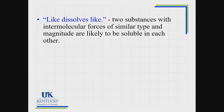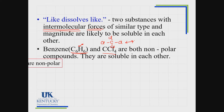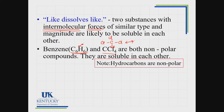What makes a solution form? Like dissolves like, which takes us back to intermolecular forces. Benzene is nonpolar, and CCl4 — a carbon surrounded by four chlorines with no lone pairs on the central atom — is tetrahedral and nonpolar. Since they are both nonpolar, they are soluble in each other. The energy to pull benzene molecules apart, the energy to pull CCl4 molecules apart, and the energy released as they come together are all around the same value because they have similar intermolecular attractions.